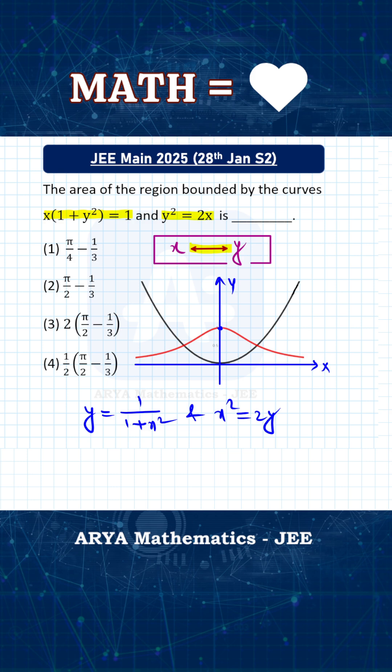So now you can see that this first graph, y equals to 1 by 1 plus x square. Generally in class we learn how to plot graph of this one. You can clearly see that when x is 0, y will be 1. The denominator is always positive, so therefore y is also always positive. And as you increase the value of x, the value of y will keep on decreasing because the denominator will increase. And when x becomes infinity, y will be very close to 0. Also we have x square, so therefore graph will be symmetric about y axis.